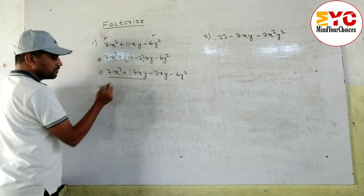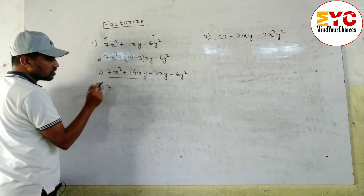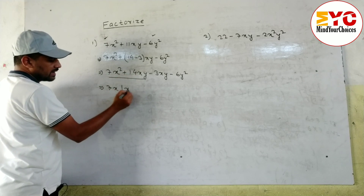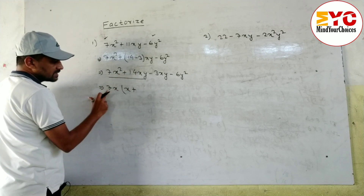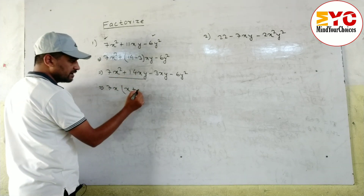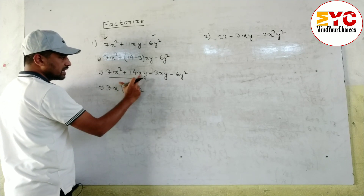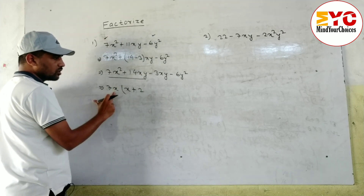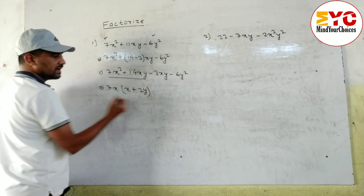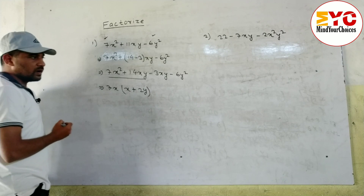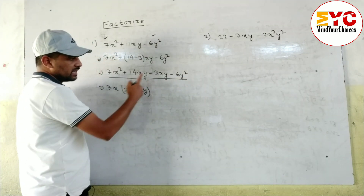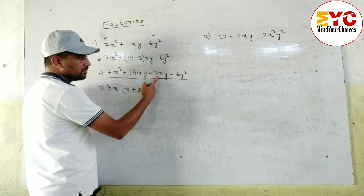From the first two terms, 7x² + 14xy, we take the common factor. 7 is common between 7 and 14, and x is common. So we get: 7x(x + 2y), because 7 × 2 = 14 and x is already factored out, leaving y.